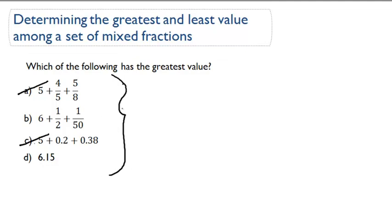Let's go ahead instead and work with answer choice B. So answer choice B is 6 plus 1 half plus 1 over 50. I want to convert this expression, this sum of integers and fractions, as a decimal.